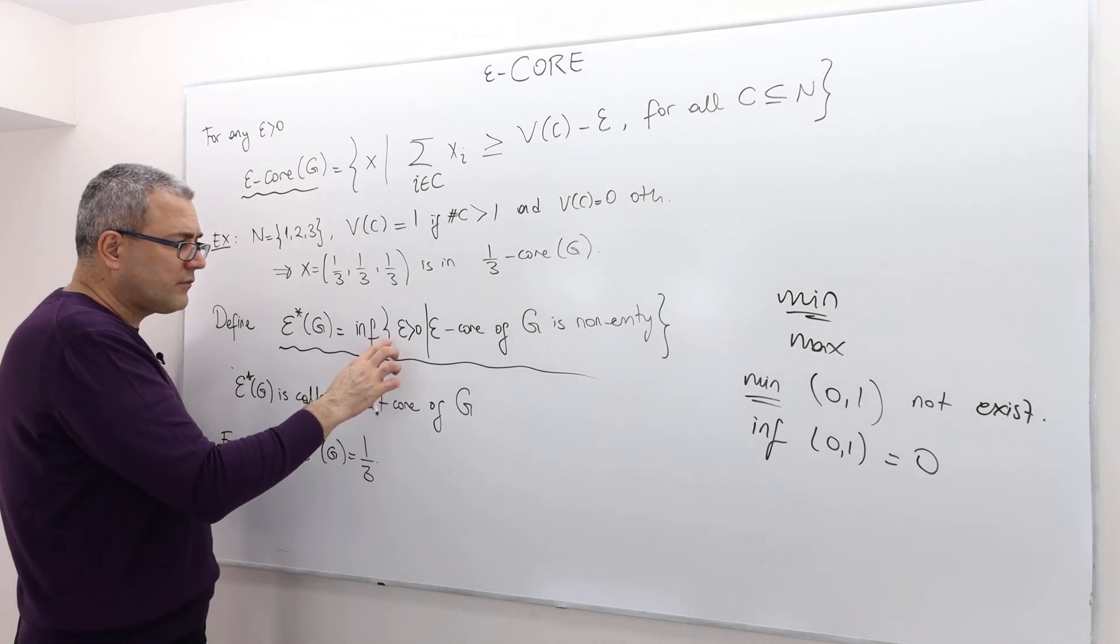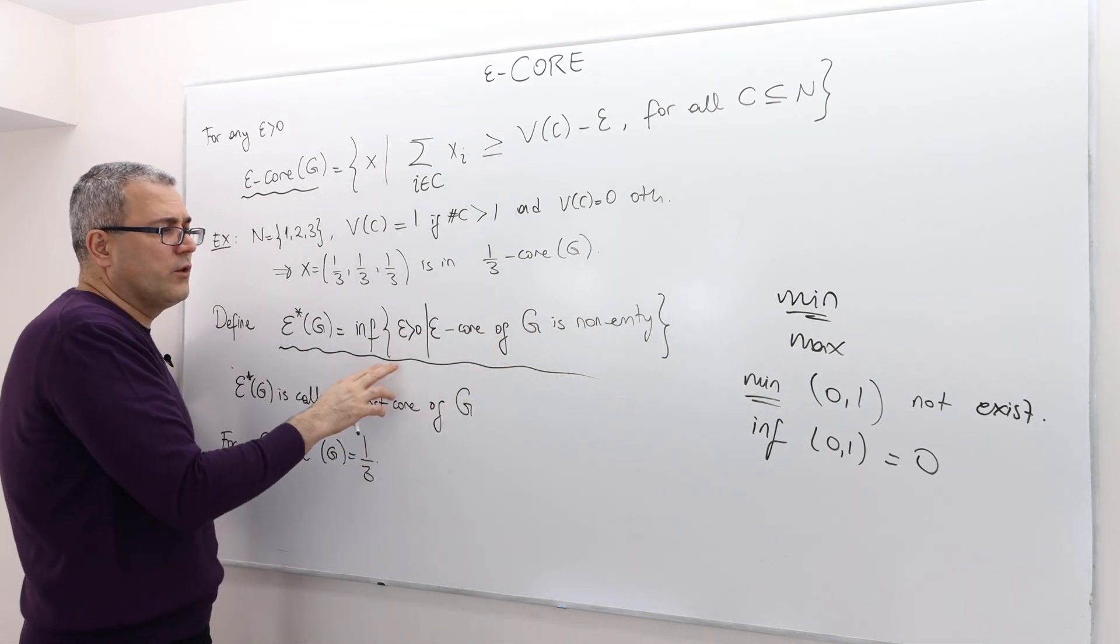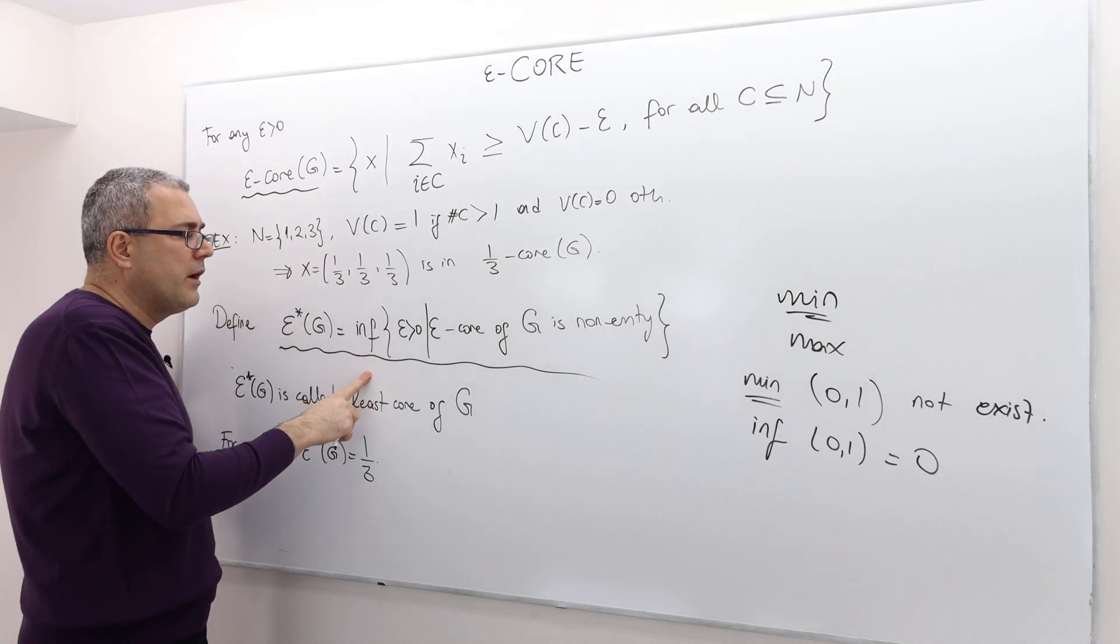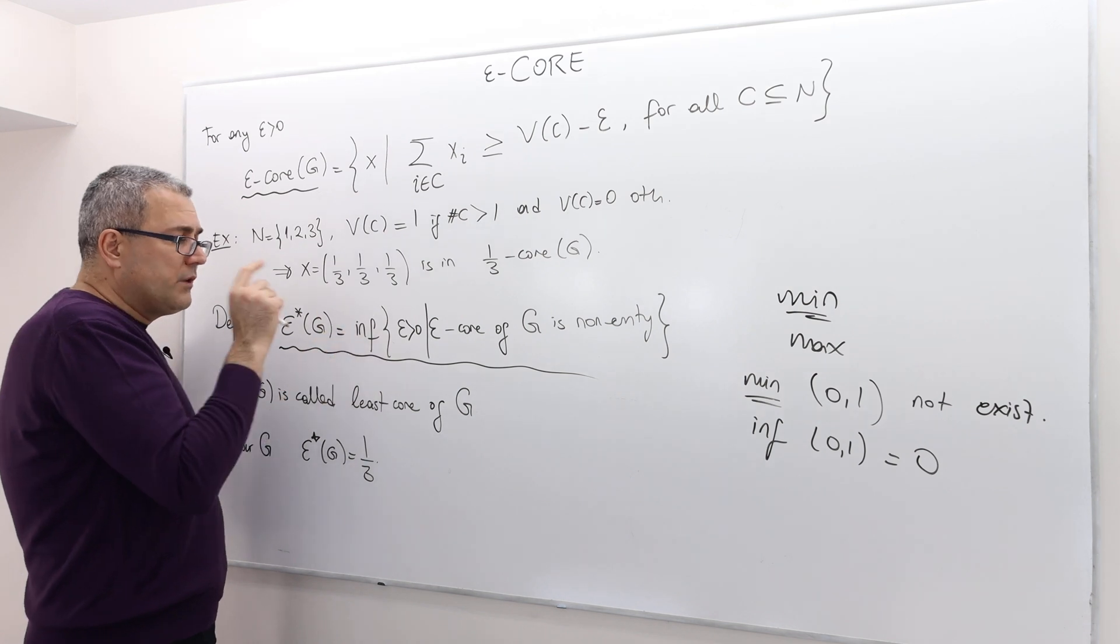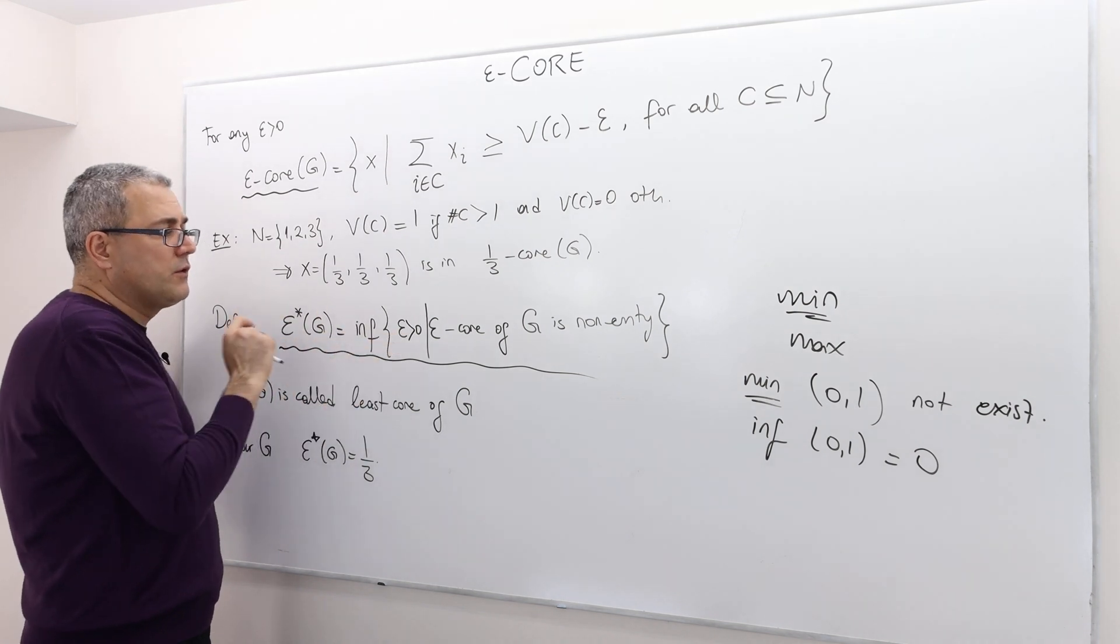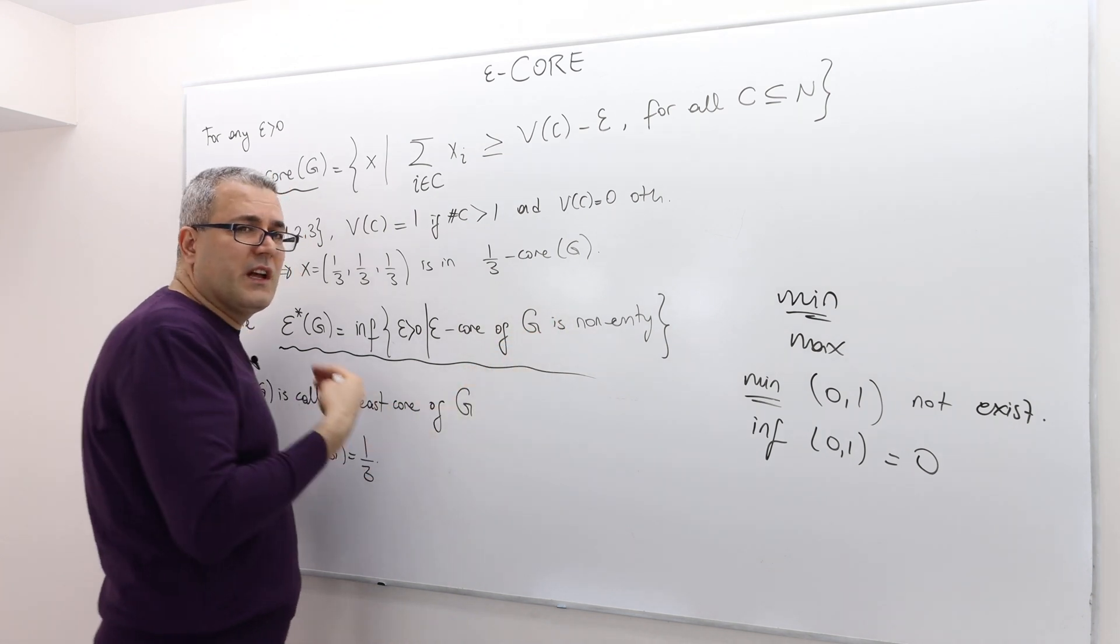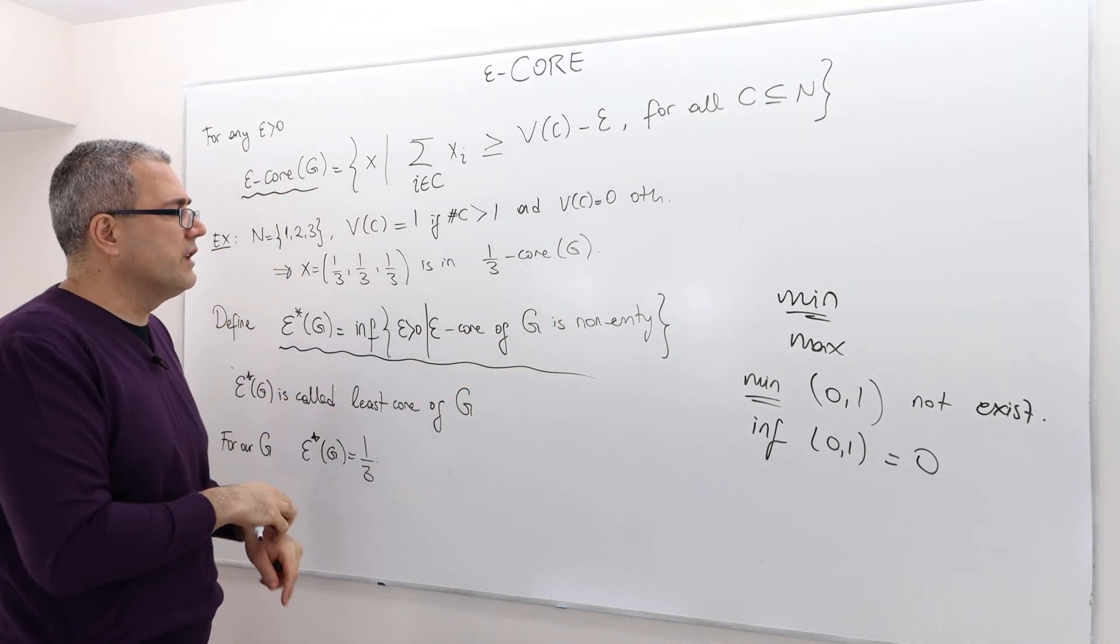Therefore, I don't know if this set is an open set, closed set, compact. I don't know it. So therefore, I take the infimum. The smallest possible epsilon, where epsilon core of the game G is non-empty. So that's what we really look.